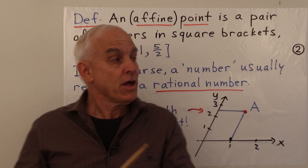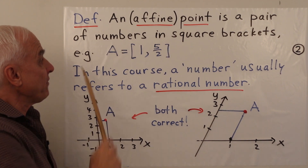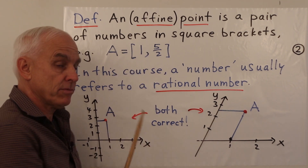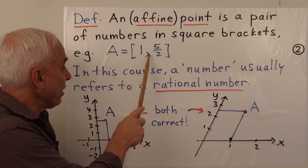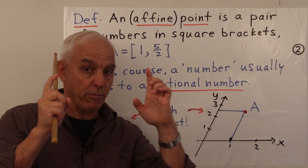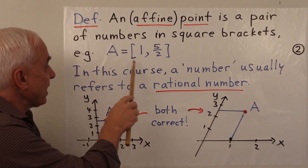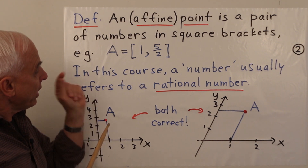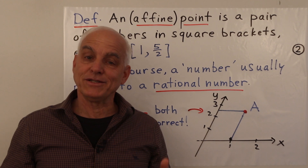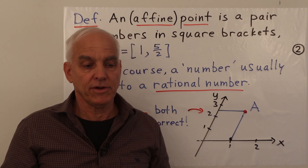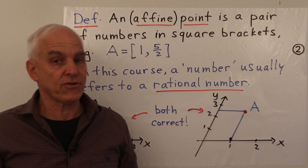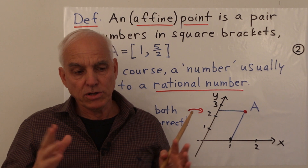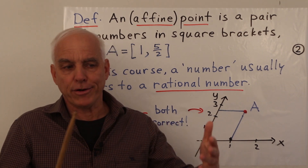Now let's make an official algebraic definition. We'll say that an affine point is a pair of numbers in square brackets — for example, A = [1, 5/2] — with a left bracket, a right bracket, two numbers separated by a comma. In this course when we refer to numbers the default is usually rational numbers, because this is a very algebraic approach. Real numbers are highly problematic and we're going to avoid them almost entirely.